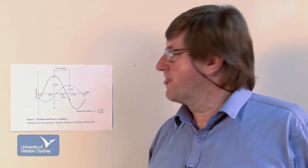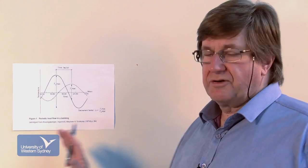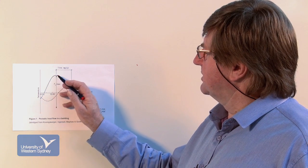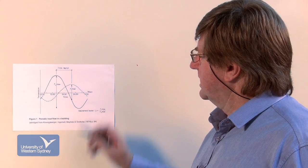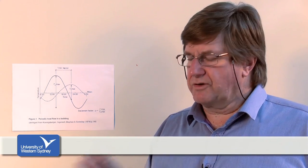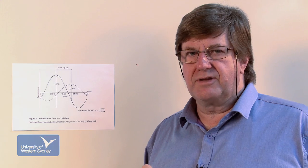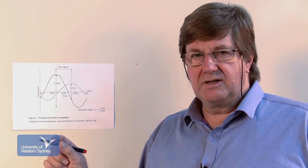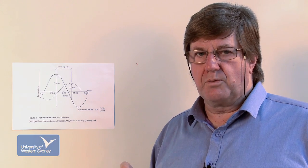Here we have the periodic heat flow through a building. We've got to imagine that we've got the outside skin of the wall represented by this solid line here. We're not told the thickness of the wall nor the composition, but let's assume it's a typical suburban brick veneer. So we've got the outside skin of the brickwork, the 40mm gap, and then the timber frame with the gyprock wall.